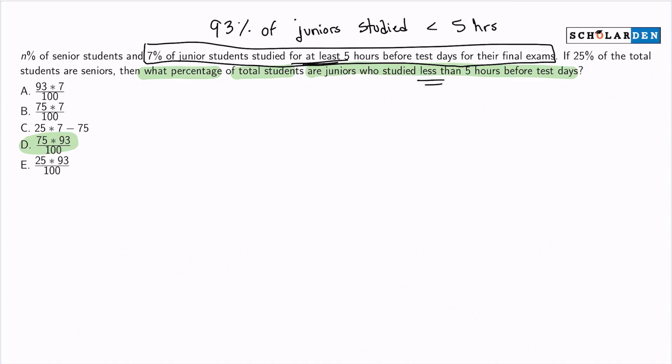Because if seven percent did more or at least, then 93 percent studied less. So we have 93 percent of juniors so far.